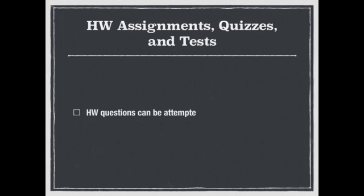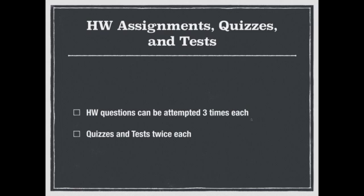Regarding homeworks and assignments — homework questions can be attempted three times. If you get a question correct, it locks in. If you get something incorrect, you can go back and redo that question. If you still get it wrong, you can try a third time. After working through a homework assignment, you can go back and rework anything you got wrong to improve your score. The maximum attempts per homework question is three times.